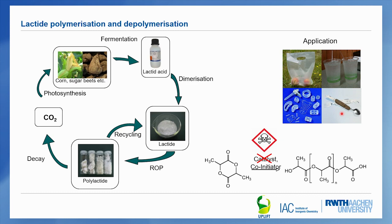Going into the details: this is lactide, a cyclic diester of lactic acid. You have to open this bond to come to the ring-opened product shown here, where the lactic acid unit is repeated again and again to form the polymer. Normally you use a catalyst and a co-initiator to promote this reaction, and as already indicated, this catalyst should not be toxic. At the moment tin octanoate performs this reaction, but tin octanoate is toxic — the more we use bioplastics, the more tin is released into the environment, and this is a huge problem.